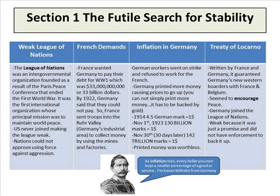You might as well use it for toilet paper. As inflation rises, every dollar you own buys a smaller percentage of goods and services. Printed money was worthless. The Treaty of Locarno, written by France and Germany, guaranteed Germany's new western borders with France and Belgium, and it did seem to encourage peace. Germany joined the League of Nations, but it just promised and did not have the enforcement to back it up.